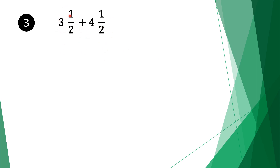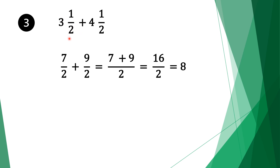Moving on to question 3, we have 3 and a half plus 4 and a half. We convert our mixed fractions to normal fractions. Multiply the denominator by the whole number: 2 times 3 is 6, plus 1 is 7. Bring the denominator 2 and the plus sign. Do the same for the second fraction: 2 times 4 is 8, plus 1 is 9. Bring the denominator 2. Now we have normal adding fractions with common denominators.